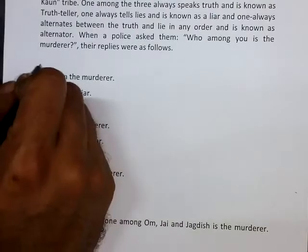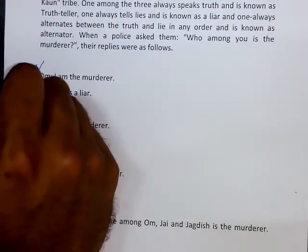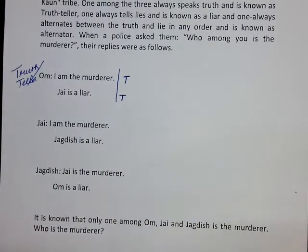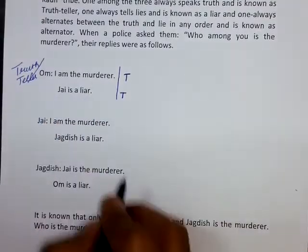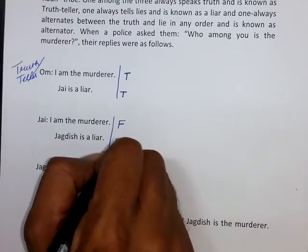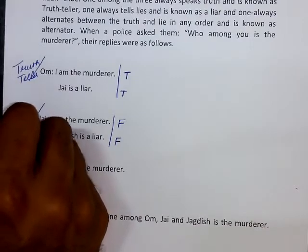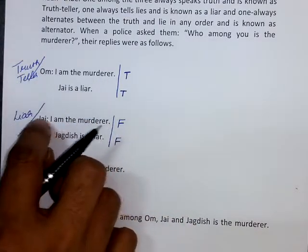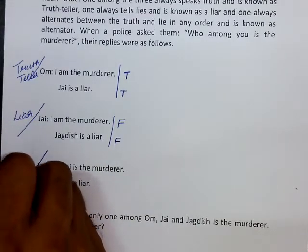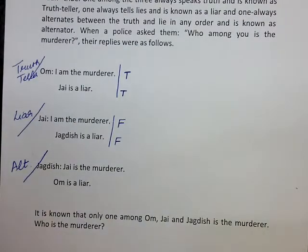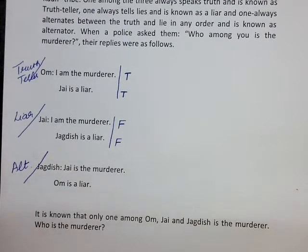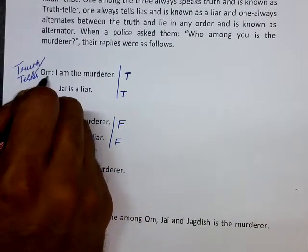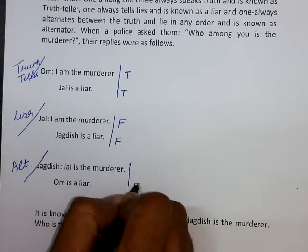Let me assume that Om is the truth-teller. Then Om's first and second statements are true. Based on this assumption, Jai is a liar, meaning Jai's first and second statements are both false. Since Om is the truth-teller and Jai is the liar, Jagadish must be the alternator. Jagadish says 'Om is a liar' — but Om is assumed to be a truth-teller, so that statement is false.